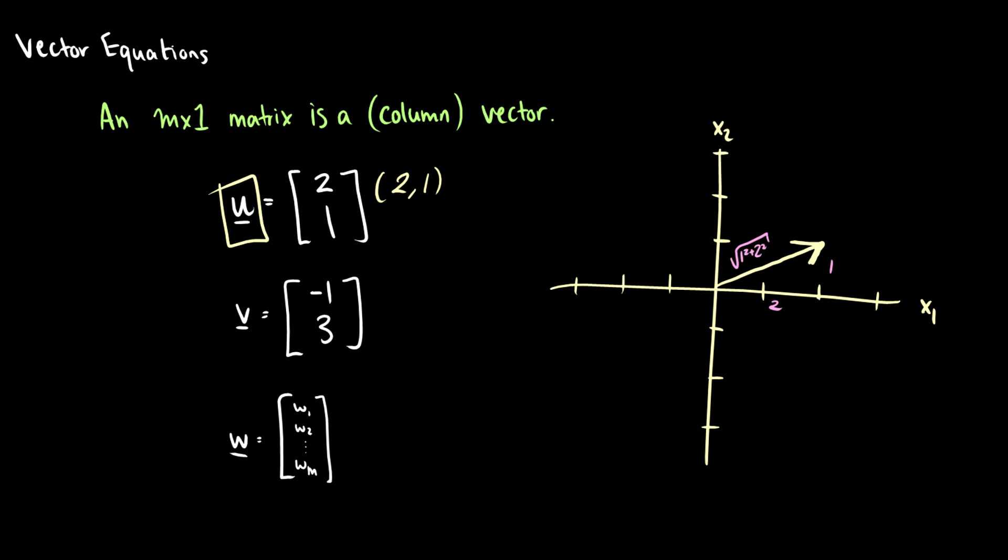So we can write another vector out. v is negative 1,3. So v is going to point up here. What about w? Well w has more than two entries. So it's not going to live in this plane that is R2. This means we have two dimensions of real numbers. Instead this w vector has m entries so it's going to live in Rm. So this is an mth dimension of real numbers. So we can't visualize this when it goes more than three dimensions. For my examples we're going to keep it in two or three dimensions. So these are vectors.